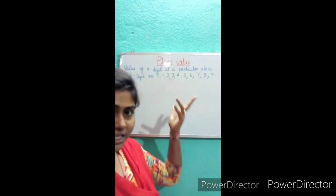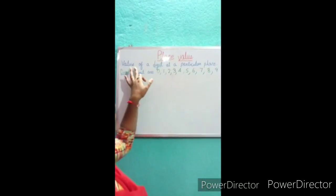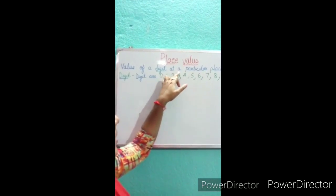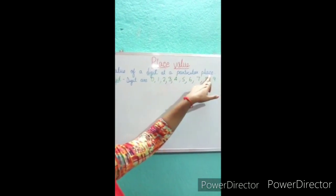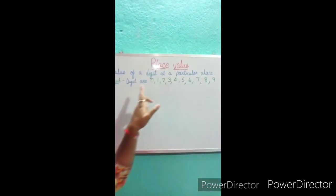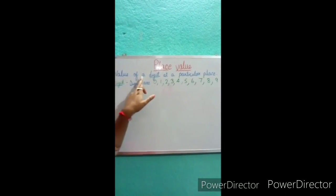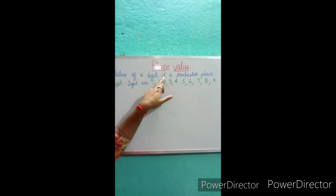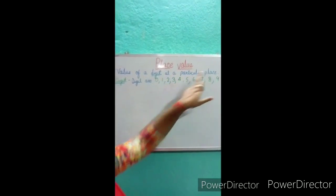So what is place value? Place value is the value of a digit at a particular place. Let us repeat: value of a digit at a particular place.